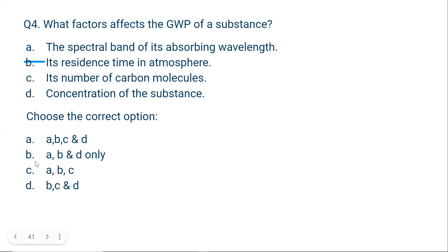So the correct option should be A, B, and D only — C doesn't apply. The spectral band of the absorbing wavelength is important. Residence time in the atmosphere also matters — more residence time means more global warming potential. And concentration matters — more concentration means more global warming potential. So A, B, and D are correct; the answer is option B (A, B, and D).